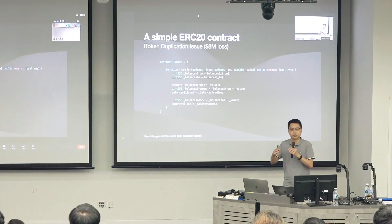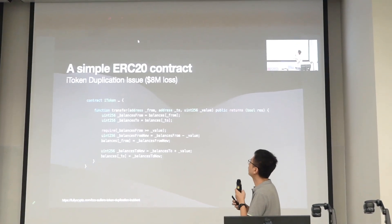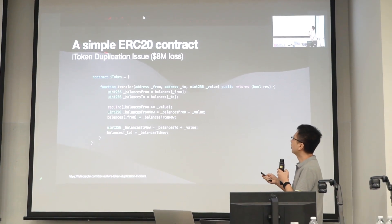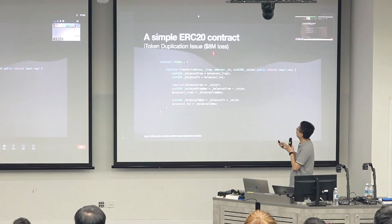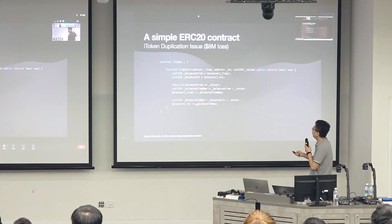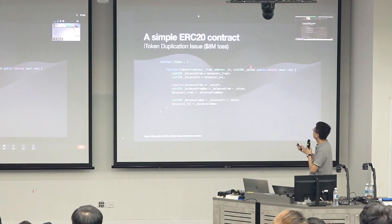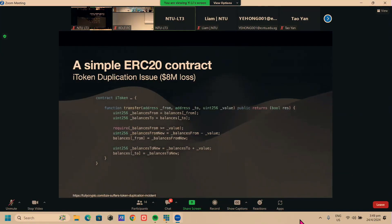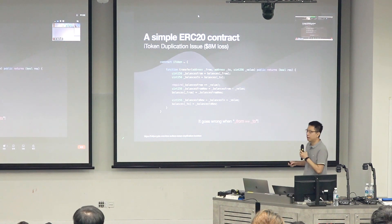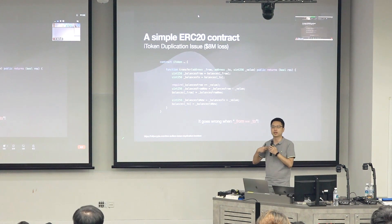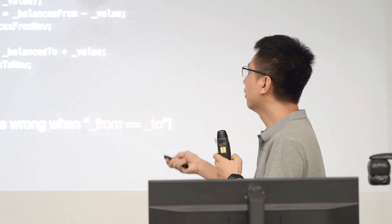Before I get into my technique for generating specifications automatically, I want to go through an example to show how these specifications might look. Here I have a simple ERC-20 contract that contains a bug — this contract was from about four years ago, called iToken, resulting in an eight million dollar loss. The problematic function is called transfer: it takes a from address, a to address, and a value representing the amount of tokens to transfer.